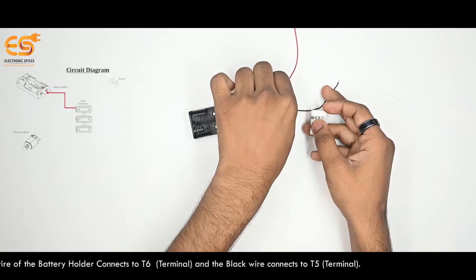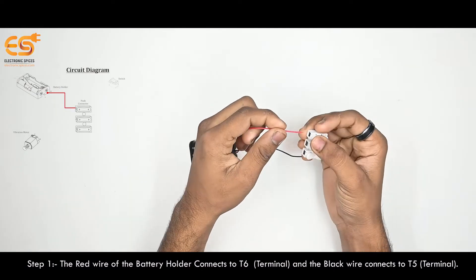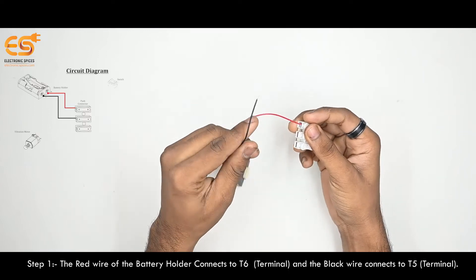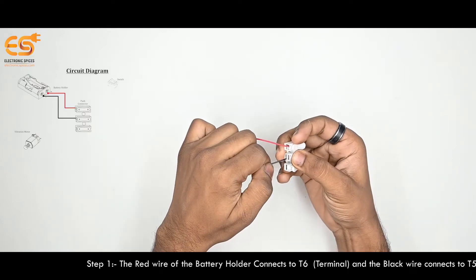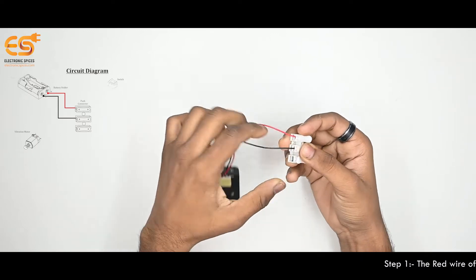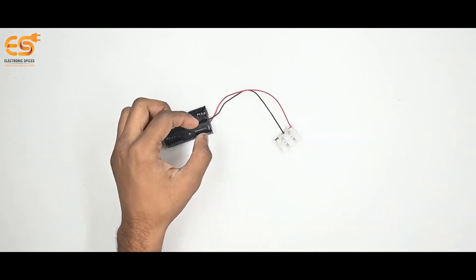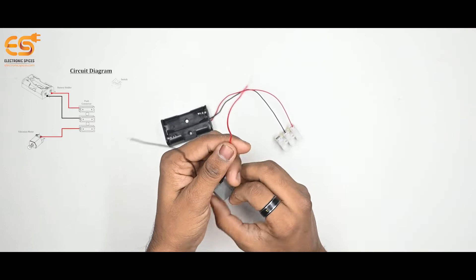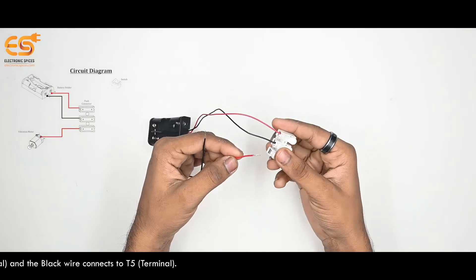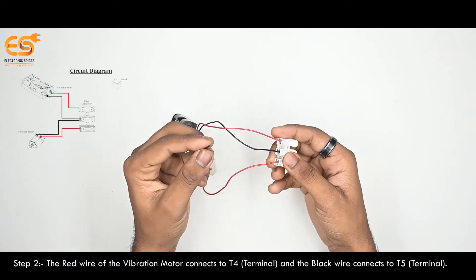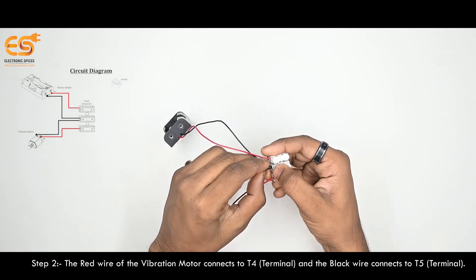The Red Wire of the Battery Holder connects to T6 Terminal and Black Wire connects to T5 Terminal. Vibration Motor: The Red Wire of the Vibration Motor connects to T4 Terminal and Black Wire connects to T5 Terminal.